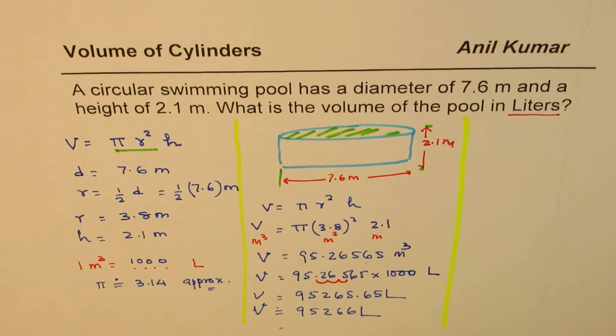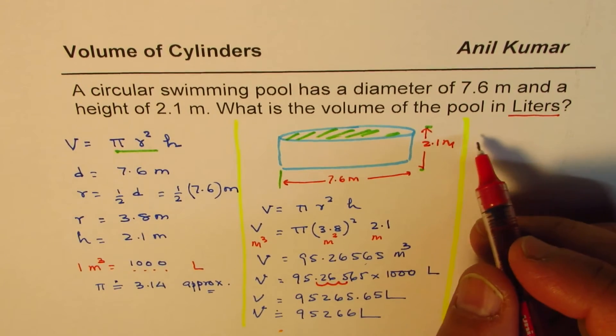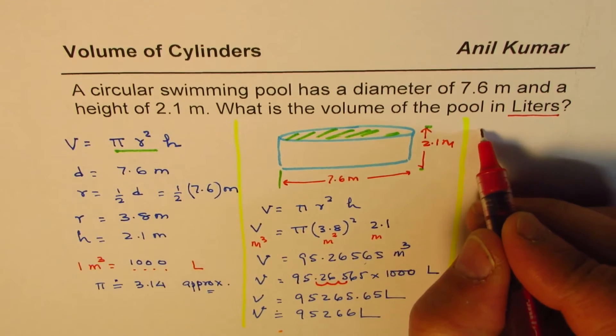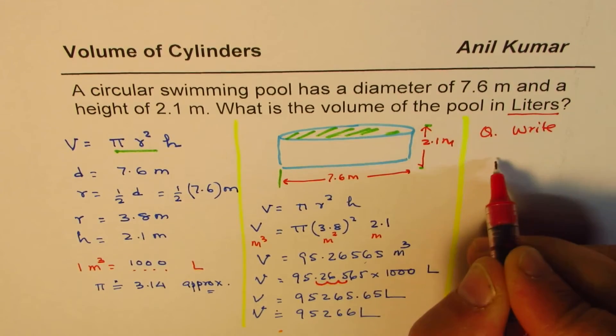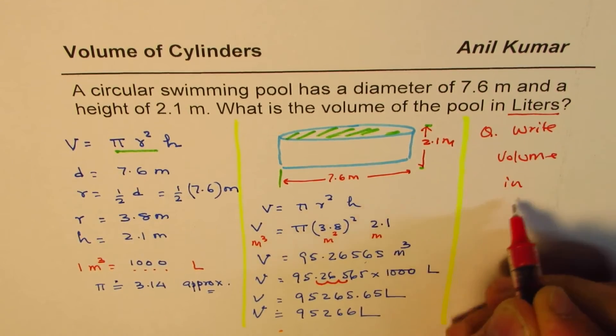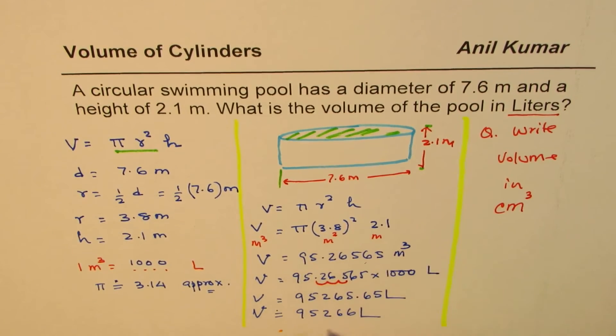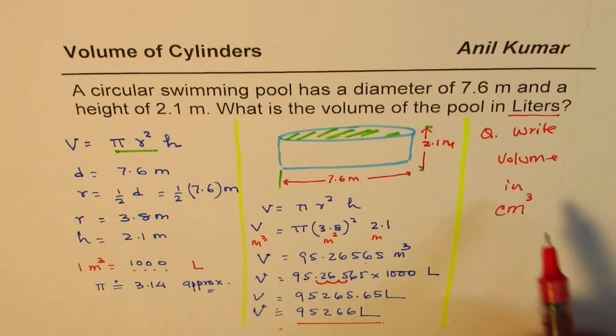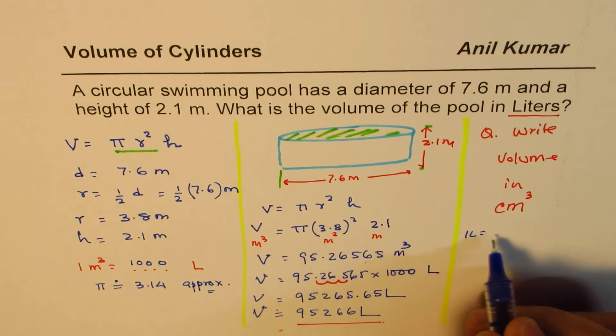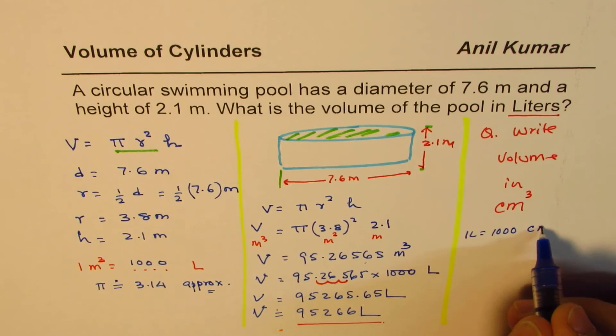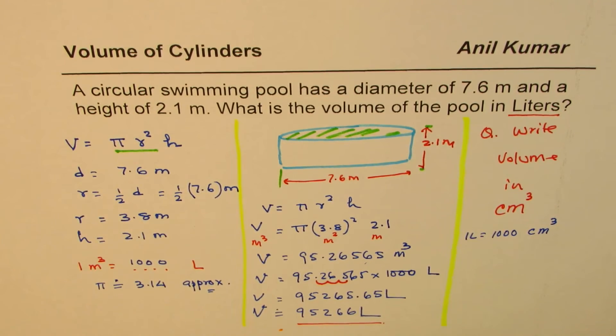Now the question for you here is: find the volume in centimeter cube. So the question for you is write volume in centimeter cube instead of liters which we just did. You will need two formulas to understand this. I'll give you formulas which can connect. One liter equals 1,000 centimeter cube. This is the formula which you can use to write this volume in centimeter cube.